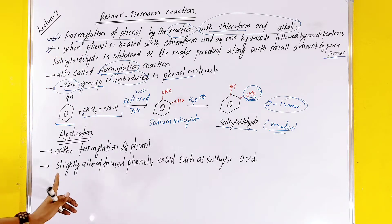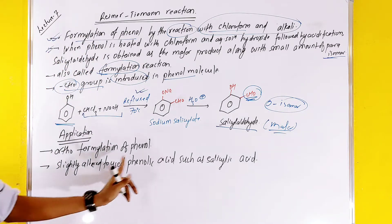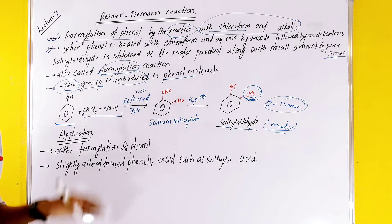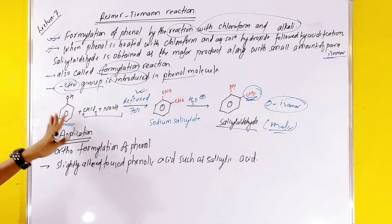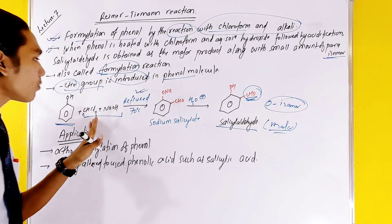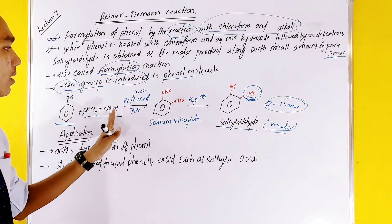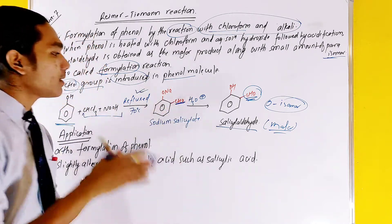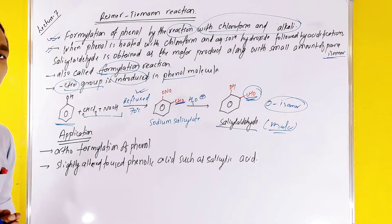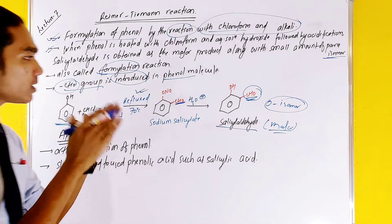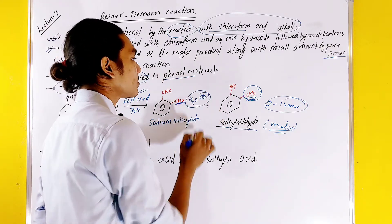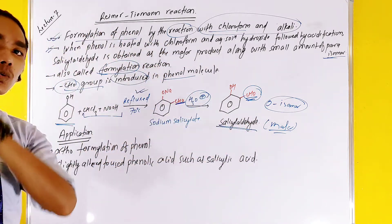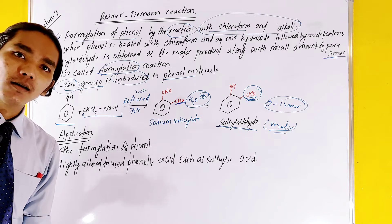This is the production of phenolic acid through the reaction of phenols with hydroxide, followed by acidification to give sodium salicylate. The formation of sodium salicylate involves H3O plus and sodium salicylate.